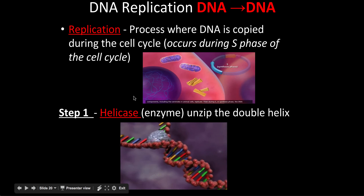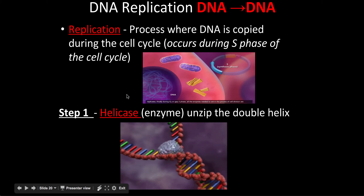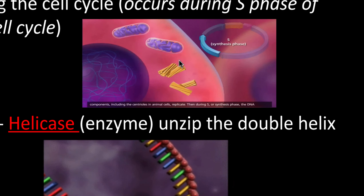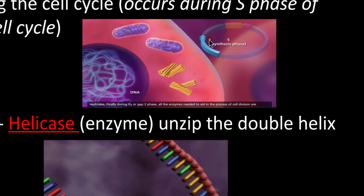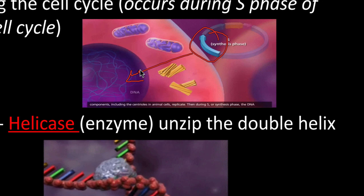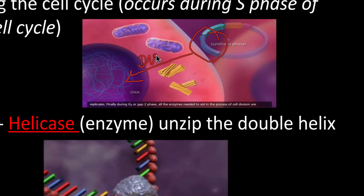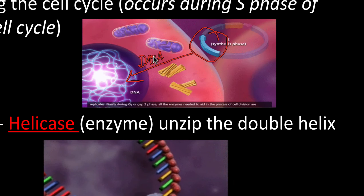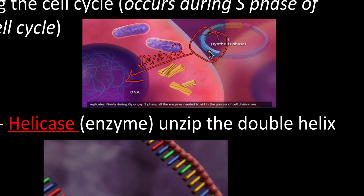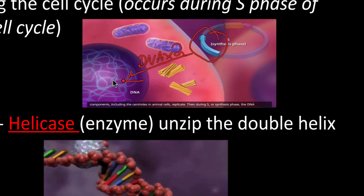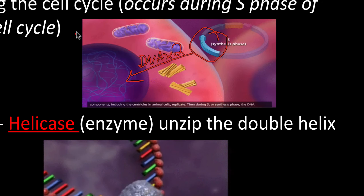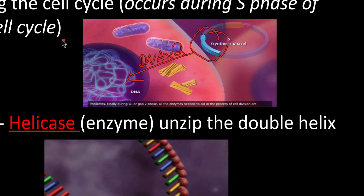The process of DNA replication: we have the structure, and the first process we'll talk about in the cell is replication. We mentioned that in the cell cycle it was the S phase — the synthesis phase — that replicates our DNA in the nucleus. Basically, DNA is going to be copied, so DNA times two in this process, in the S phase or synthesis phase.